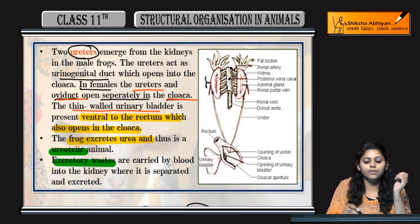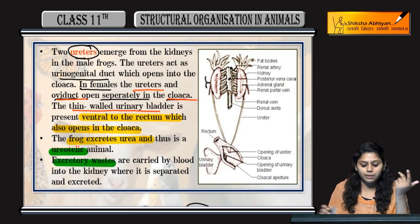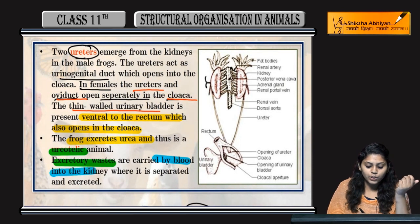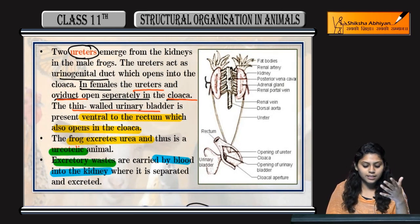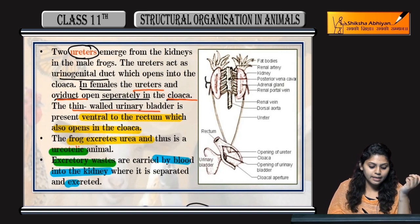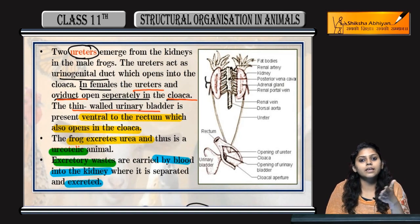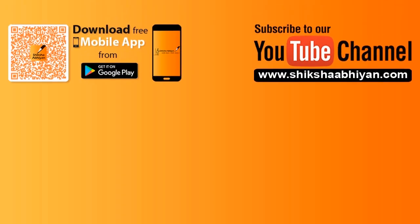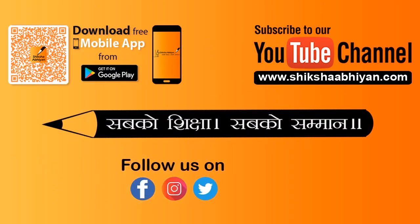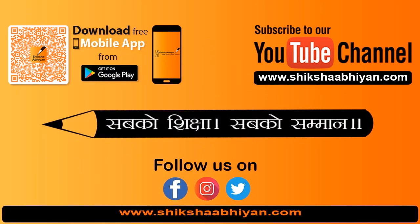Excretory waste jo hai, woh kaise carried out hoota hai body mein? Carried by blood into the kidney. Kidney mein jab pahunch jata hai, then it is separated and excreted — kloaca se ya phir excretory pore se out of the body of frog.